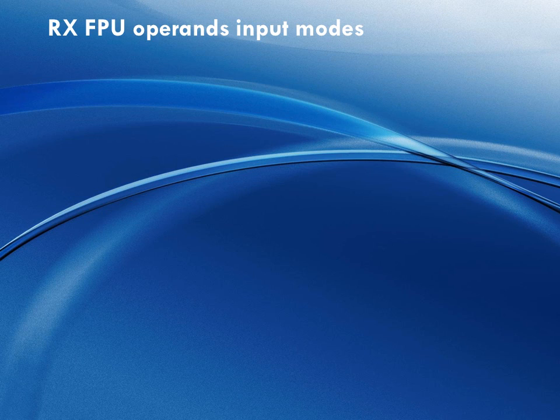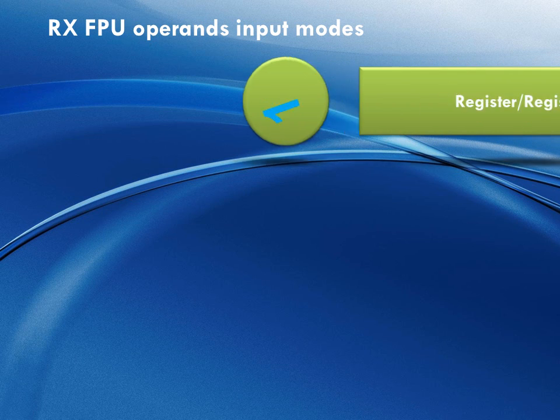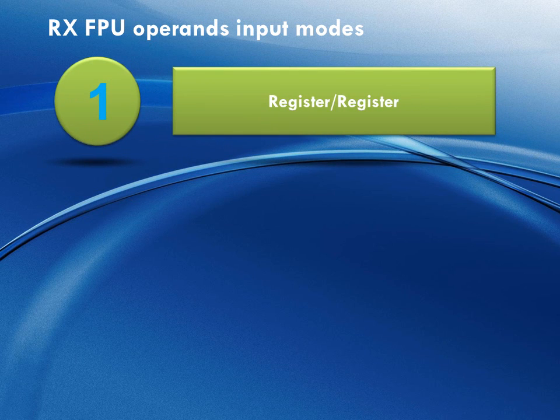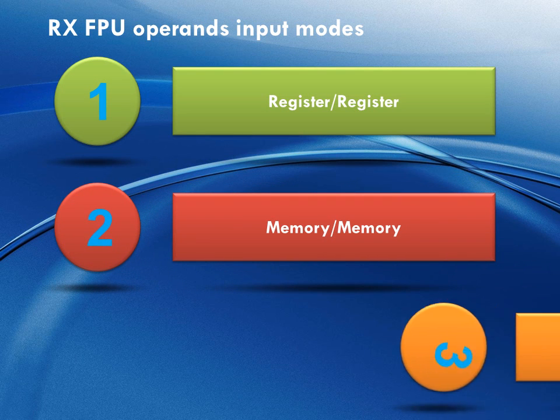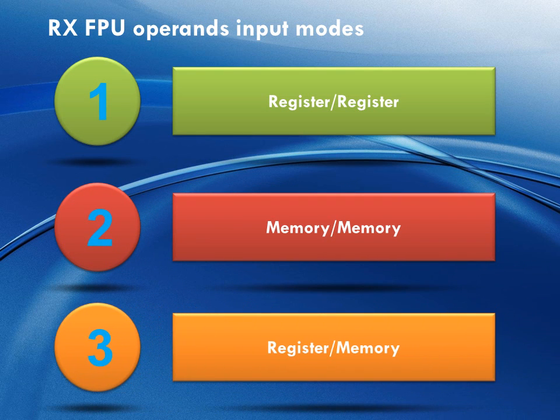Additionally, the RX FPU leverages the RX powerful addressing mode, bringing FPU performance even one step further. A few operations can be executed taking each of the two operands both from registers, both from memory, or one from register and one from memory. Operation results can go either into a register or directly into memory.